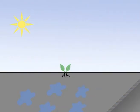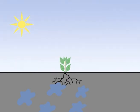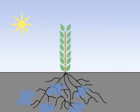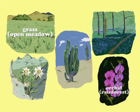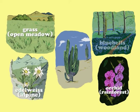If a plant has the right amount of nutrients, water and sunlight, it will grow, producing new plant material. Different plants grow well in different conditions, and have features that suit them to the environment where they live.